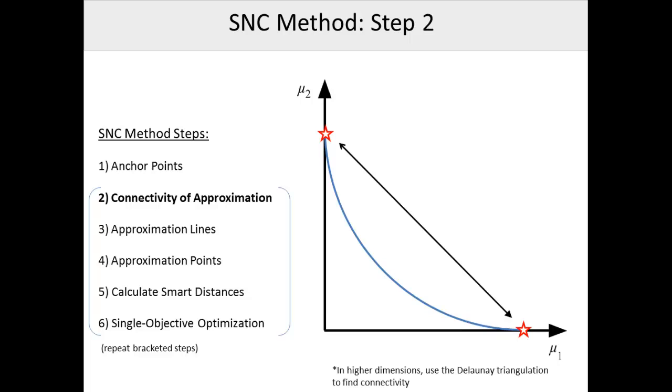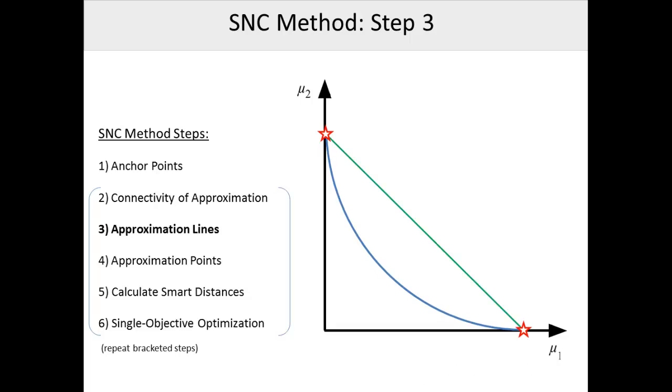In step 2, we determine how to connect our known Pareto points to form a linear approximation of the Pareto frontier. In 2D, each Pareto point simply connects to its neighbors on either side. In higher dimensions, we find the Delaunay triangulation of our Pareto points to divide up the approximation surface. That can be done using the built-in function DelaunayN in MATLAB. Next the approximation lines are made, and these lines are discretized into evenly spaced approximation points.